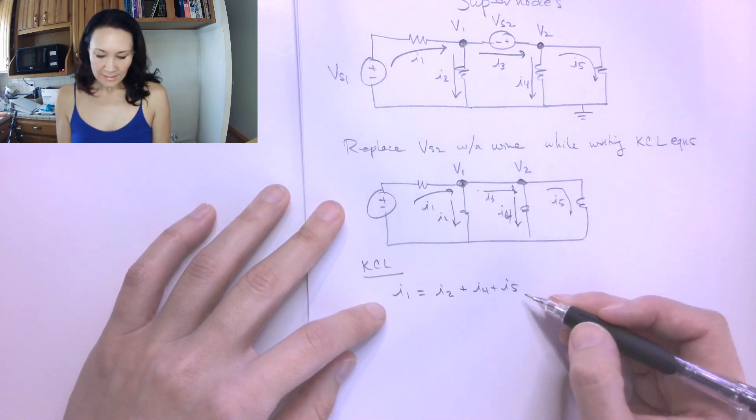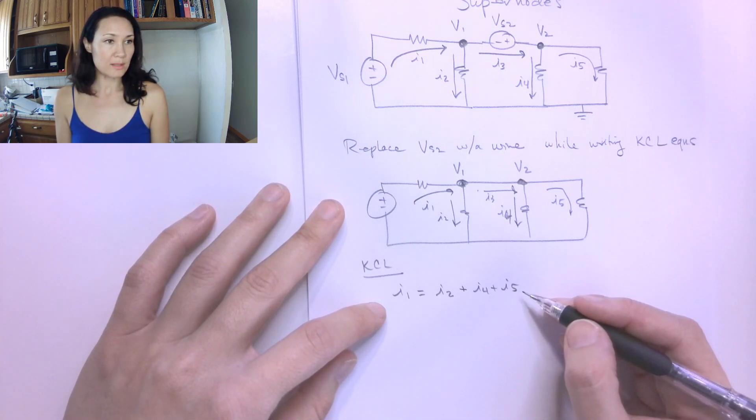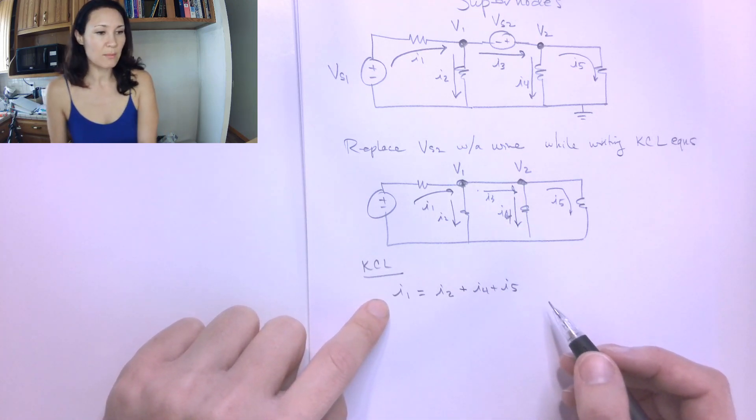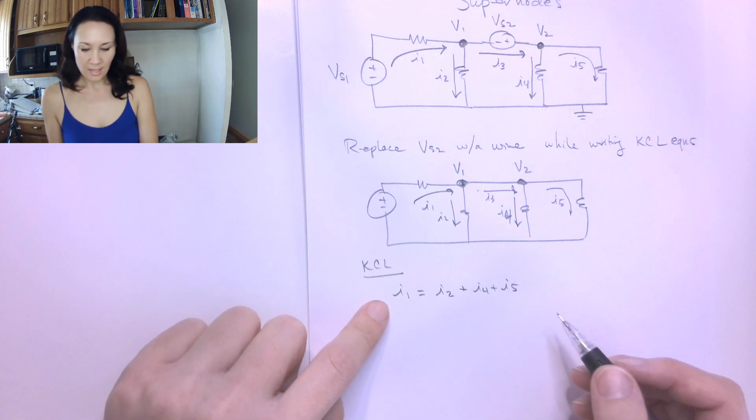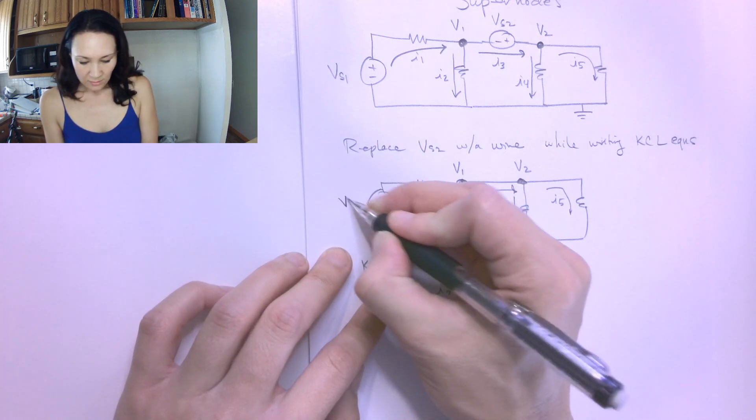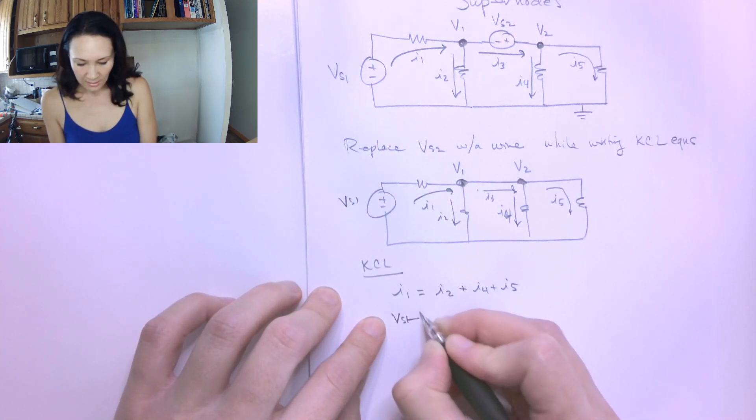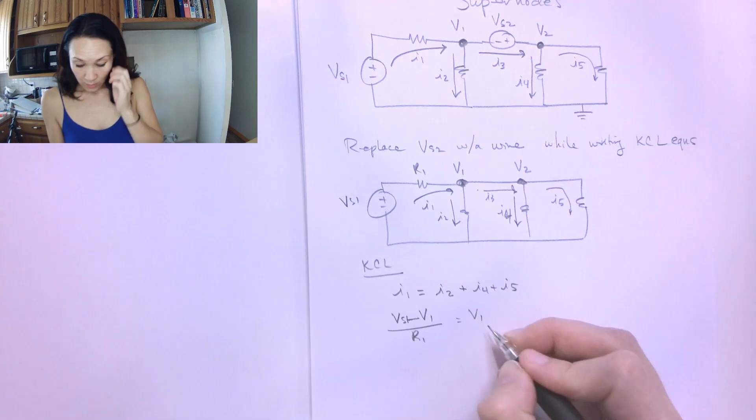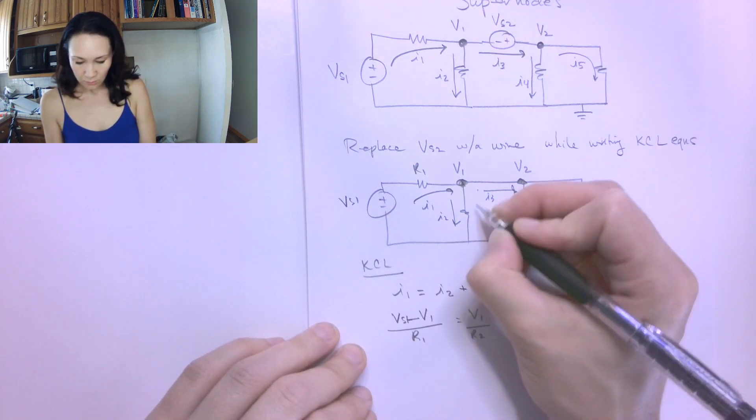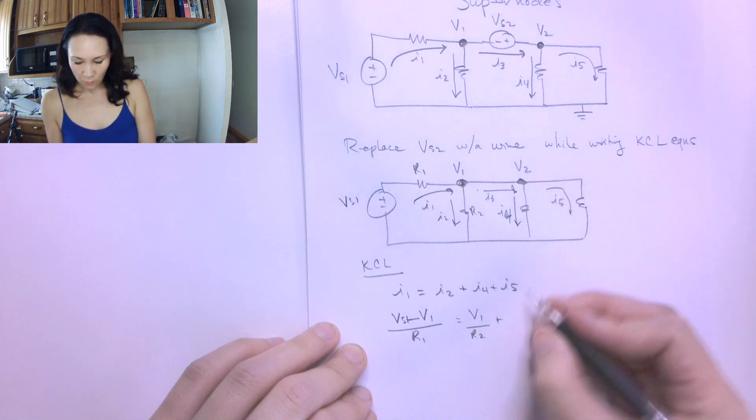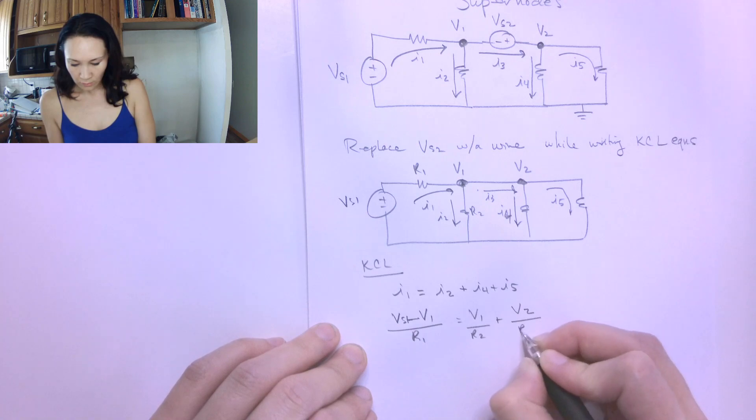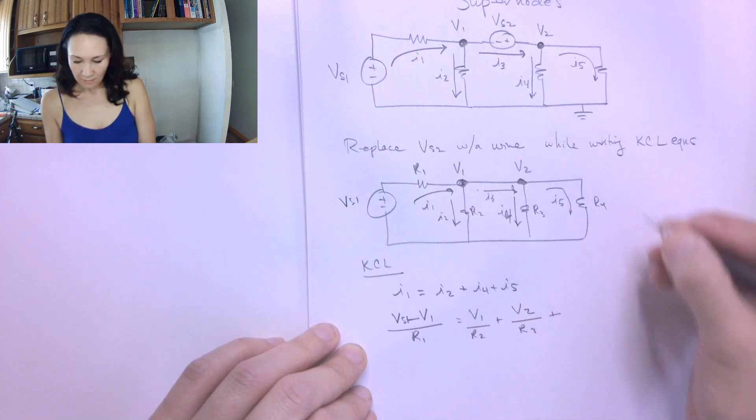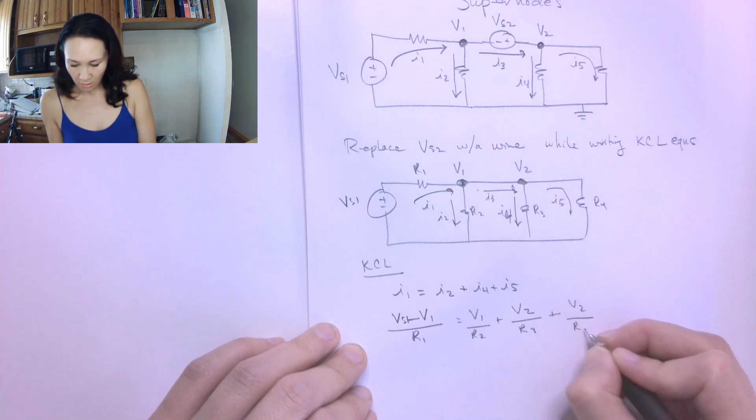Now, the next step in the node voltage process is I'm going to rewrite all of these current equations in terms of V and R. So those are going to be my node voltage equations. And the way I would do that is, this is VS1. This would be VS1 minus V1 over the resistor between, I'll call that R1, is equal to V1 over R2, plus I4 is going to be V2 over R3, I'll let this be R4, plus I5 is also V2 divided by R4.